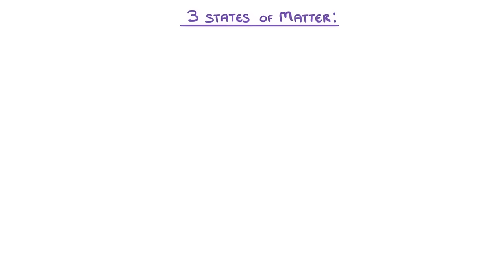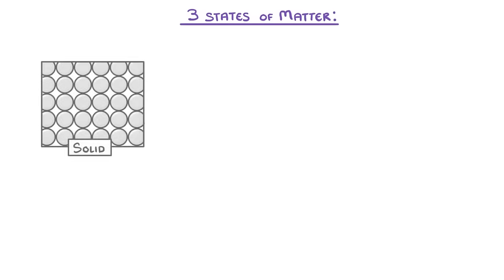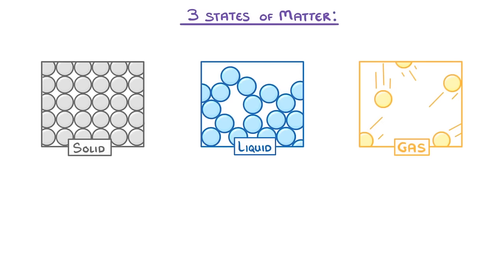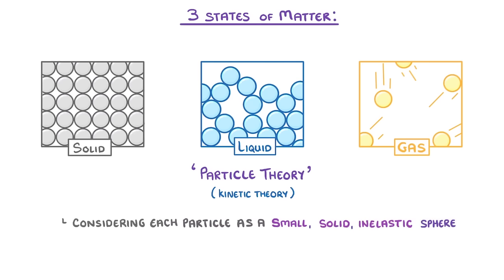In this video we're going to look at the three states of matter: solid, liquid and gas, and see how substances can change from one state to another. To do this we're going to use a model called particle theory, or sometimes kinetic theory, which helps us explain how the particles in each state behave by considering each of the particles as a small solid inelastic sphere.